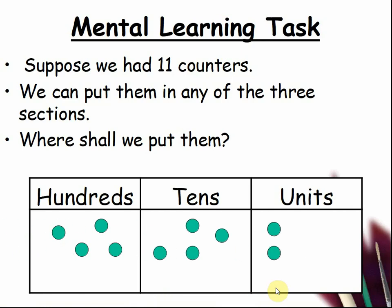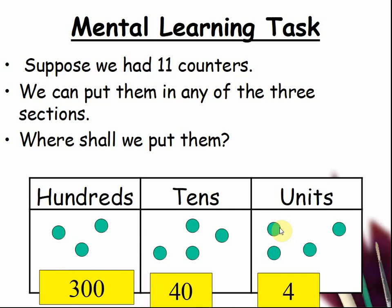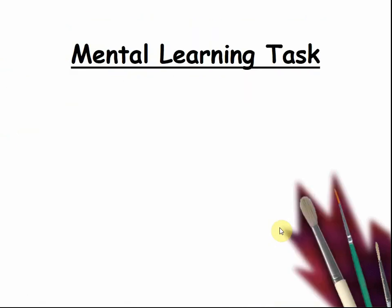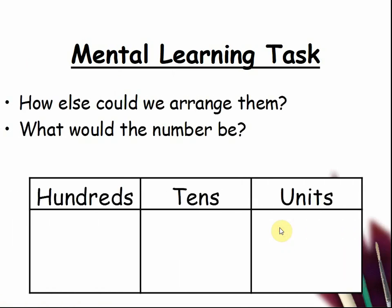How about this time, what do I have? I have 3 hundreds, 4 tens, which makes 40, and 4 units. So, it would be 344. How else could we arrange them? What would the number be? So, get 11 magnets or crosses on the board. Pause the video and see what numbers you and the class can make.